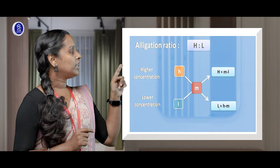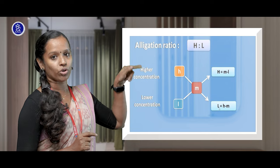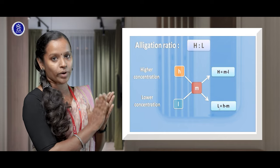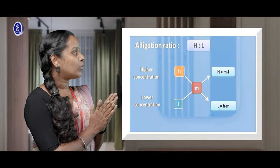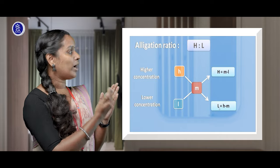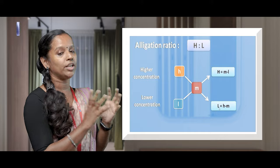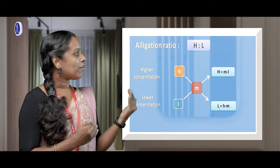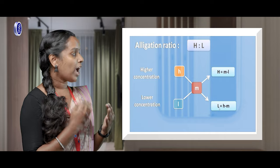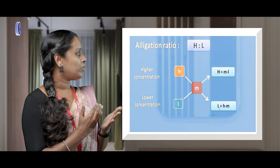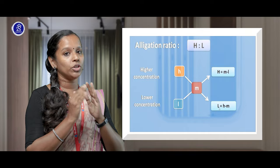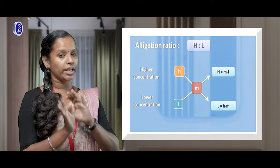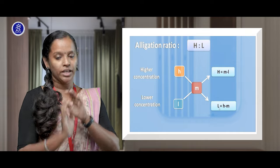In the allegation method, you make a cross. To find how much higher concentration you need, you take the required concentration M minus the lower concentration L. To find how much lower concentration you need, you take the higher concentration H minus the required concentration M. So the parts of higher concentration needed equals M minus L, and the parts of lower concentration needed equals H minus M.